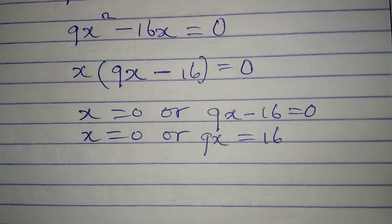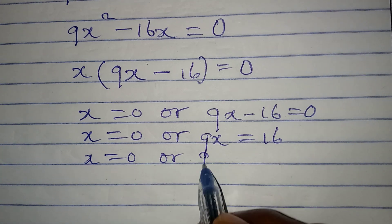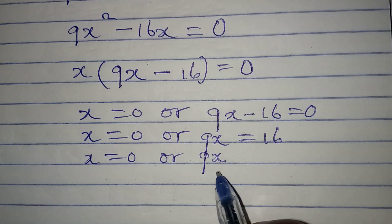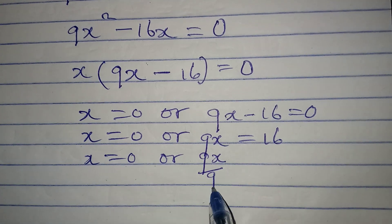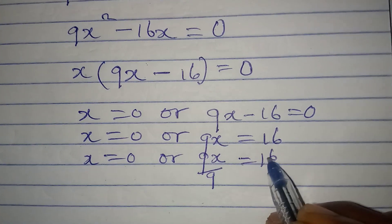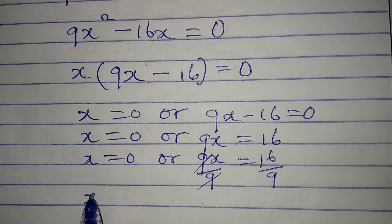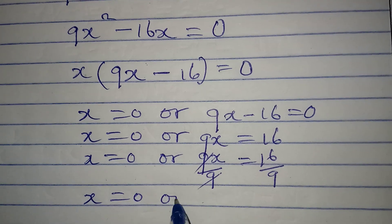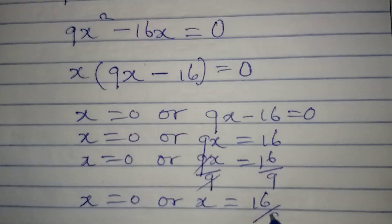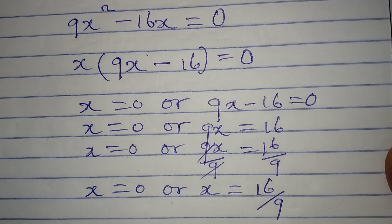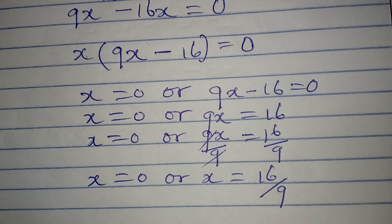So X equals 0, or from 9X minus 16 equals 0 we get 9X equals 16, and dividing both sides by 9 gives X equals 16 over 9. We cannot reduce this fraction to a lower term because 16 and 9 share no common factor.